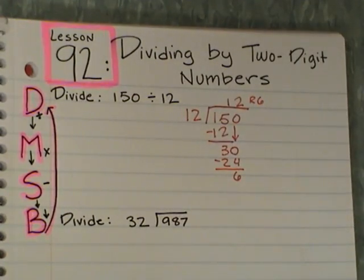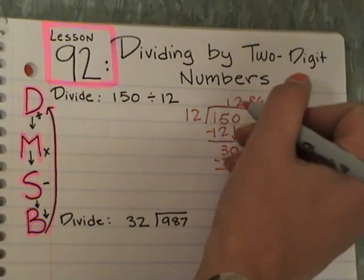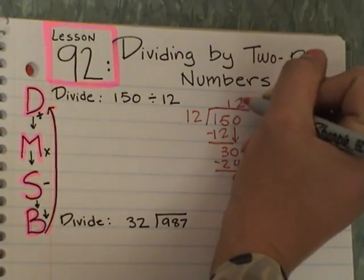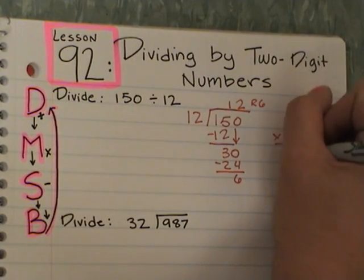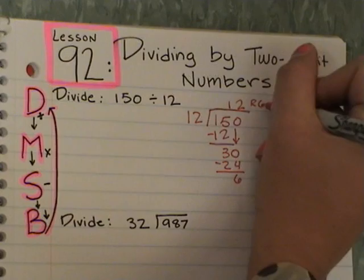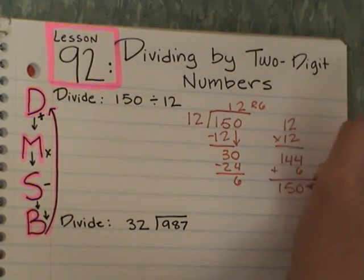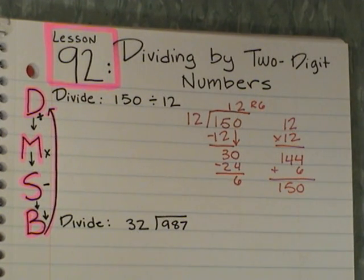I have nothing left to bring down, so 6 must be my remainder. So my answer would be 12, remainder 6. Now we can also put our remainder into a fraction form, so it would be 6 over 12, which if we reduced would be 12 and 1 half. Don't forget that you can check your answer.